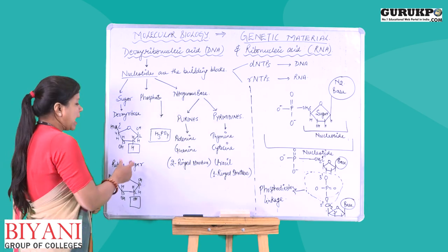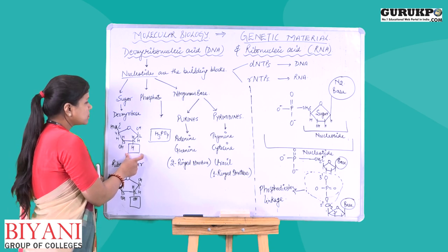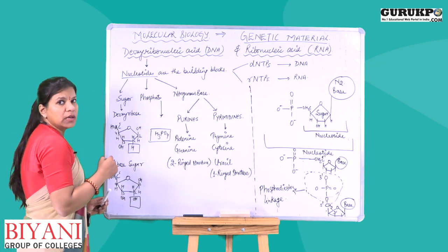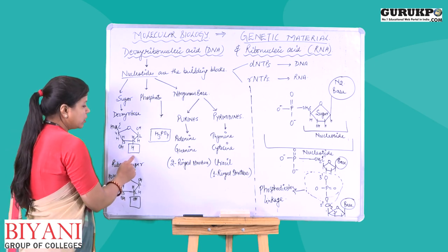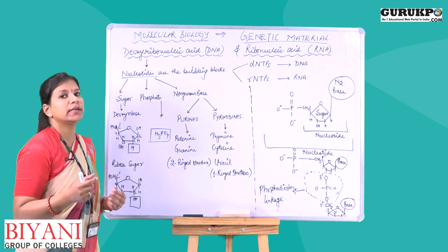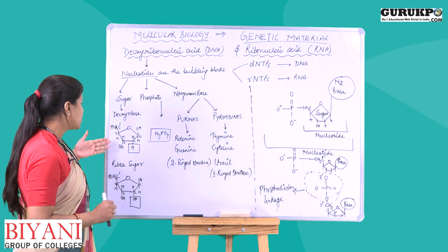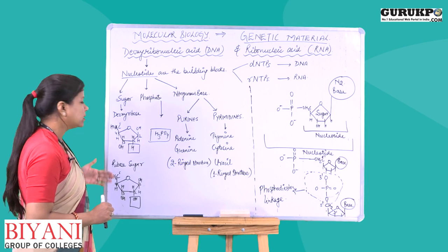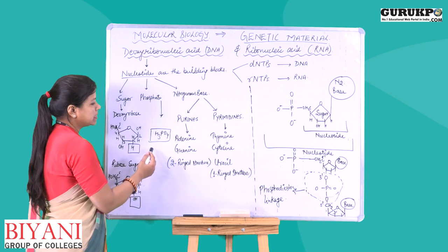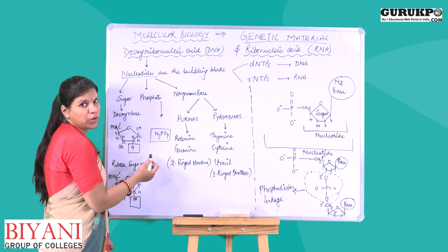Because of the absence of the hydroxyl group — or simply the absence of the oxygen atom — at the second carbon of deoxyribose sugar, the name is given 'deoxy', meaning that the oxygen is absent. This is how the names deoxyribose sugar and ribose sugar are derived. The third and most important part of a nucleotide is the presence of a phosphate group in the form of H₃PO₄.